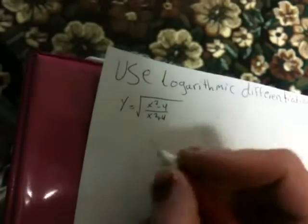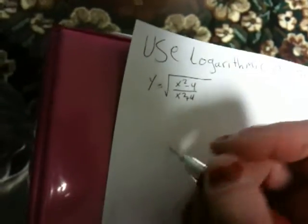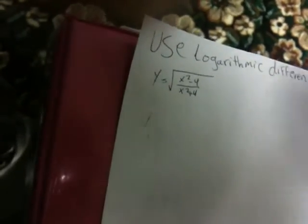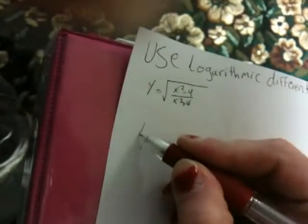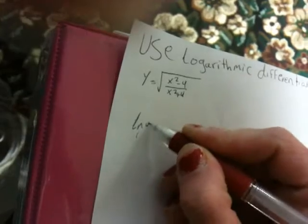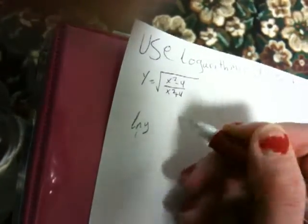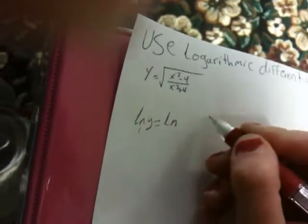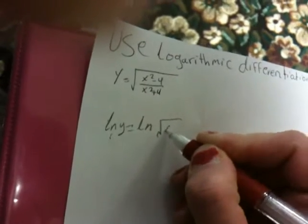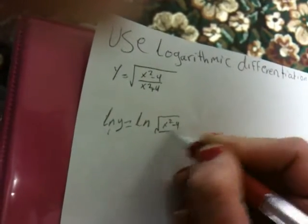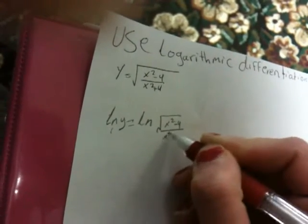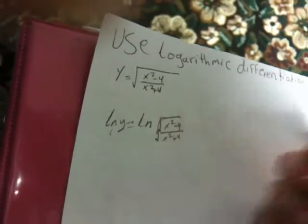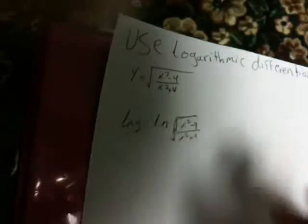The first thing we will do is find the ln. We take ln of both sides: ln y equals ln of the square root of x squared minus 4 over x squared plus 4.